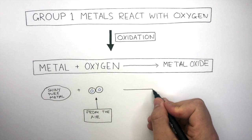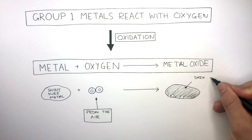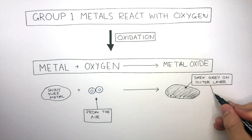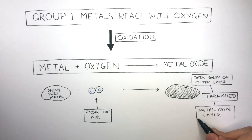When the shiny pure alkali metal reacts with oxygen, a dark grey outer layer forms. We say the alkali metal has been tarnished and the metal oxide layer has formed on the outside of the alkali metal.